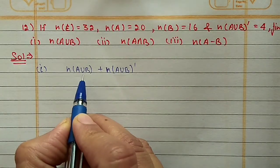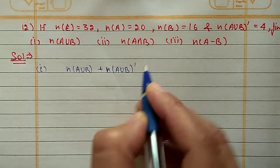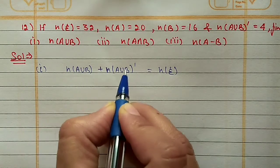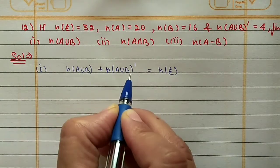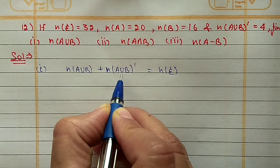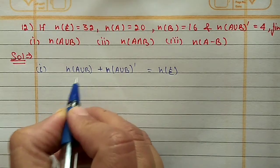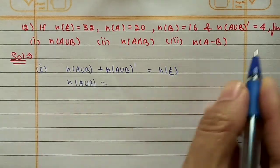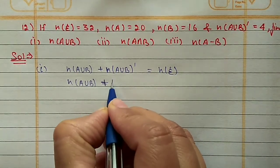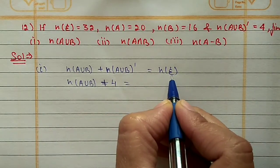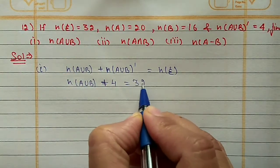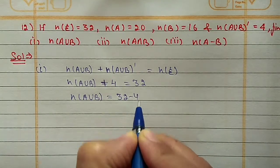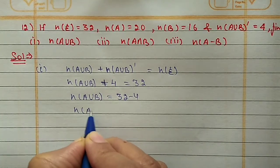The cardinal number of any set and the cardinal number of its complement is always equal to the universal set. Here we take A∪B as our set, so A∪B complement gives us the complement. N(A∪B) is what we need, N((A∪B)') is given as 4, and N(U) is 32. So N(A∪B) = 32 - 4 = 28.